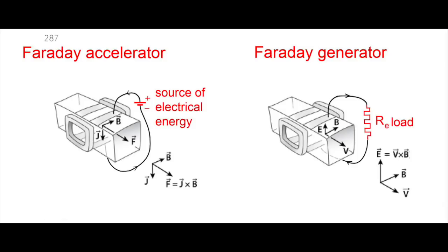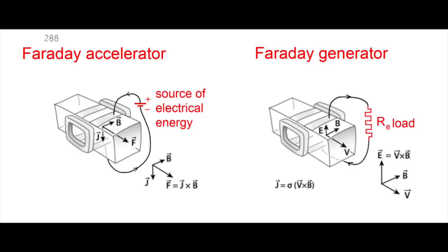Inside the channel, the plasma is submitted to an induced electric field V cross B, which produces an electric current J. This is nothing but the Ohm law. Combined to the magnetic field, this goes with a Lorentz force J cross B, which slows down the fluid so that we transform kinetic energy into electricity.